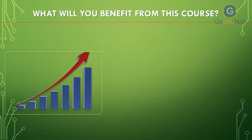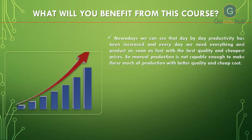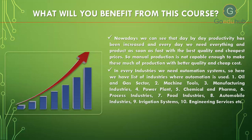As we know, demand is increasing but production is not keeping up, and in order to maintain quality at a lower cost we have to move towards industrial automation. So here comes the role of the industrial automation engineer. In every industry we need automation systems. Industries where automation is used include: oil and gas, machine tools, manufacturing, power plants, chemical and pharma, process industries, food industries, automobile industries, irrigation systems, and engineering services.